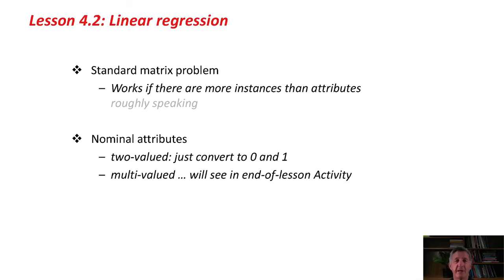If we did have nominal values, if we just had a binary value of 0 and 1, we could just convert it to 0 and 1 and use those numbers. If we had a multi-valued nominal attribute, you'll have a look at that in the activity at the end of this lesson.